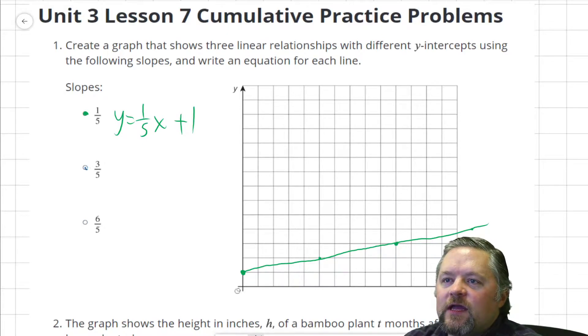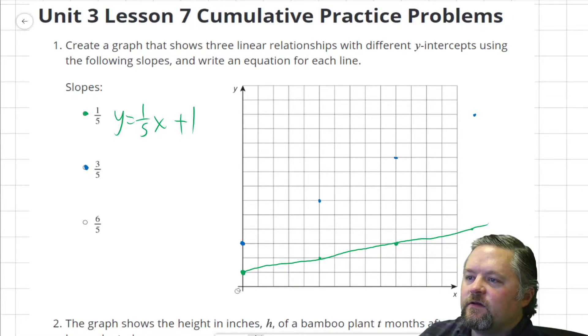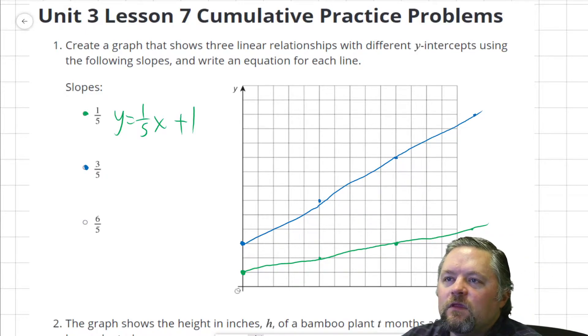Next one we have is 3 fifths. I'll start it here. Up 3 over 5, up 3 over 5, up 3 over 5. Y equals our slope, 3 fifths, x plus our y-intercept, which is 3.